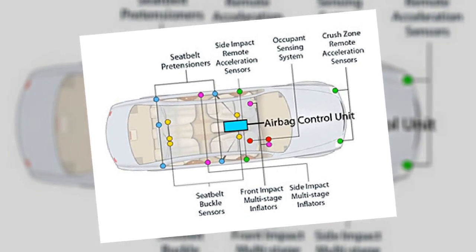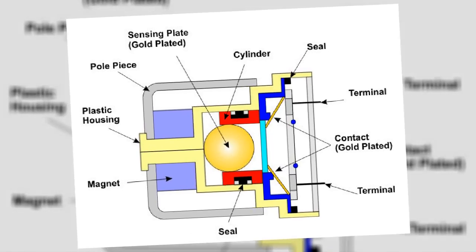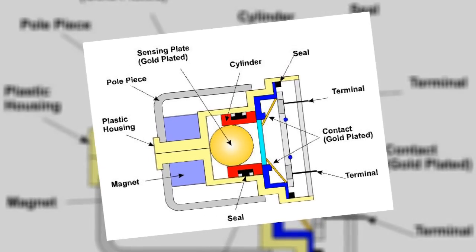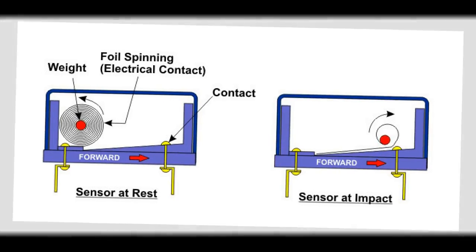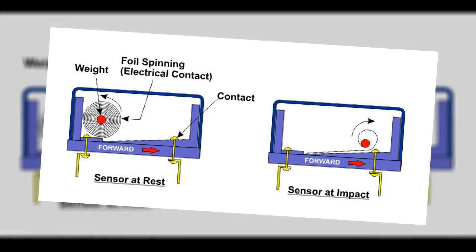The main component of an airbag system is the crash sensor. It is a steel ball that slides inside a smoothbore, where the ball is inhibited from moving when the car drives over bumps or potholes. However, when the car decelerates very quickly as in a head-on crash, the ball suddenly moves forward.